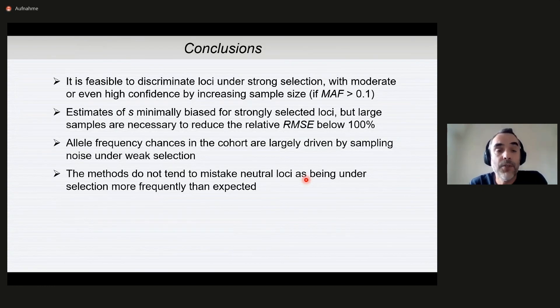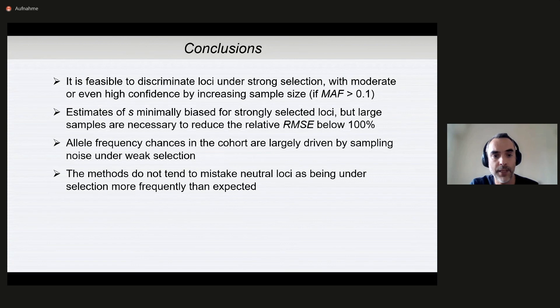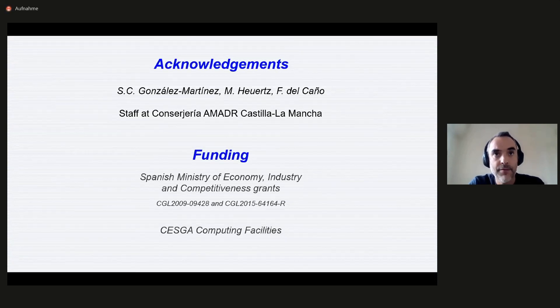As conclusions, it is feasible to discriminate loci under strong selection with moderate or even high confidence by increasing the sample size as long as the locus is not close to fixation. The estimates of the selection coefficients are minimally biased for strongly selected loci, but large samples are necessary to reduce the relative root mean square error below 100%. Under weak selection, allele frequency changes are largely driven by sampling noise, so there is really not much that we can infer here. And the good news is that the methods do not tend to mistake neutral loci as being under selection more frequently than expected. With this I finish my presentation and I will be happy to take questions if there are any.